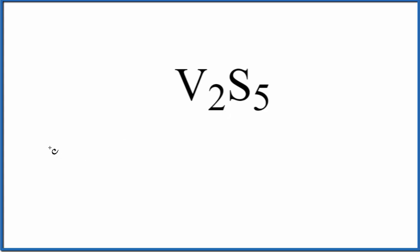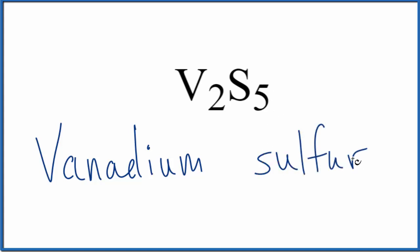So write the name of the metal as it appears on the periodic table, that's vanadium. And then we're going to write the name of the non-metal as it appears on the periodic table, lowercase s, and then we're going to cross the ending out here and change it to IDE.